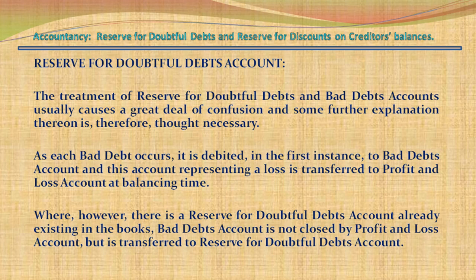As each bad debt occurs, it is debited in the first instance to bad debts account, and this account representing a loss is transferred to Profit & Loss Account at balancing time. However, where there is a Reserve for Doubtful Debts Account already existing in the books, bad debts account is not closed by Profit & Loss Account but is transferred to Reserve for Doubtful Debts Account.